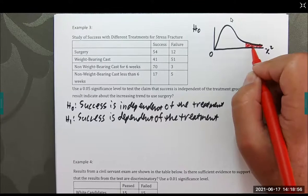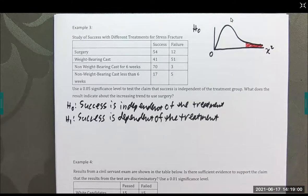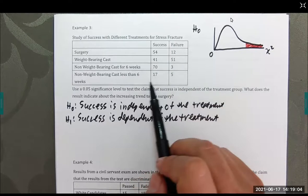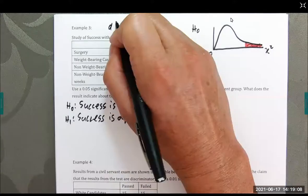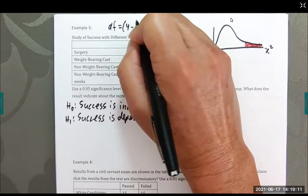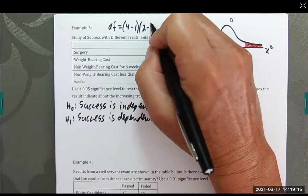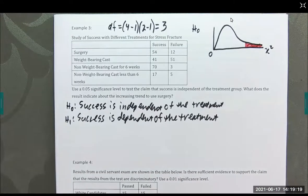And we could find the critical value, but we really don't need to. Let's find the degrees of freedom real quick. If you remember, it was the number of rows 1, 2, 3, 4 minus 1. So degrees of freedom is going to be 4 minus 1 times 2 minus 1. So that's going to be 3.